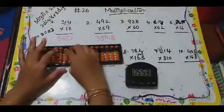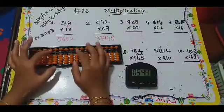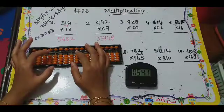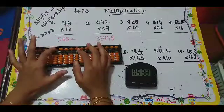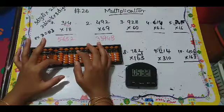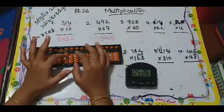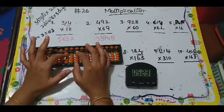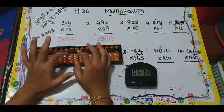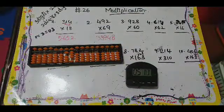Let's see a few more examples. 928 times 60. We need five columns. We'll multiply six with 928: nine sixes are 54, so 54. Six twos are twelve: one two. Six eights are 48: four eight. The next digit is zero, so we don't need to do anything.